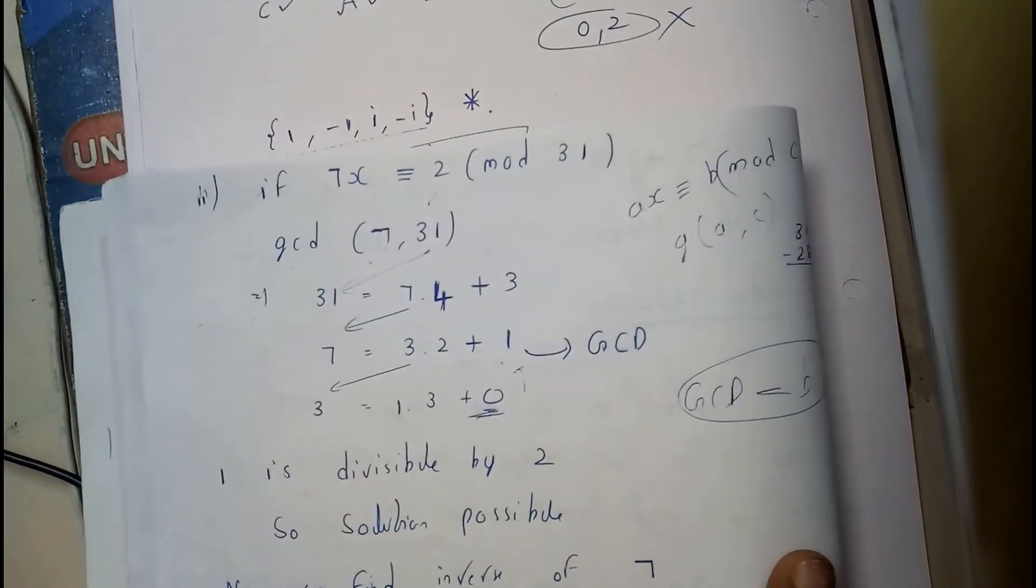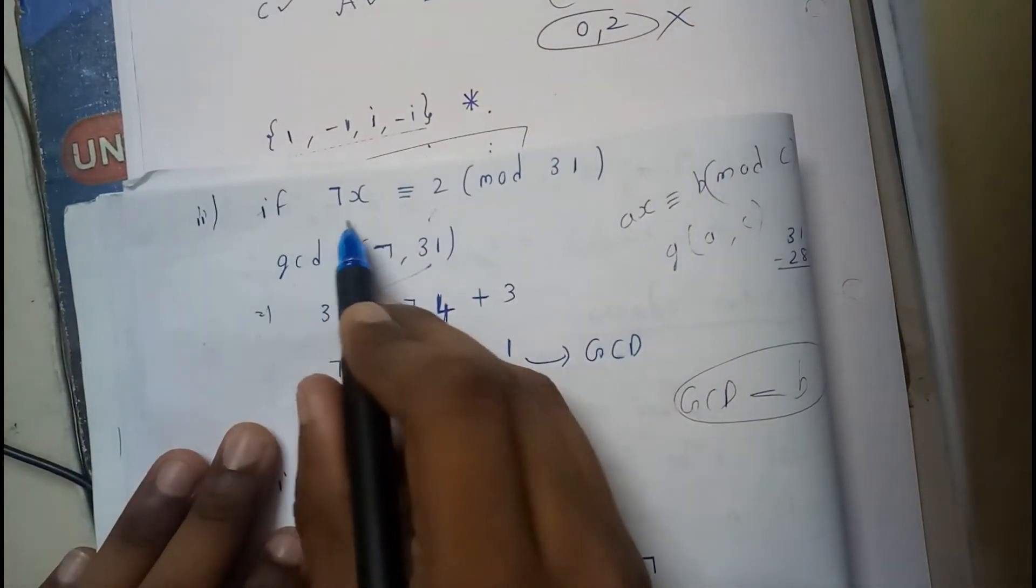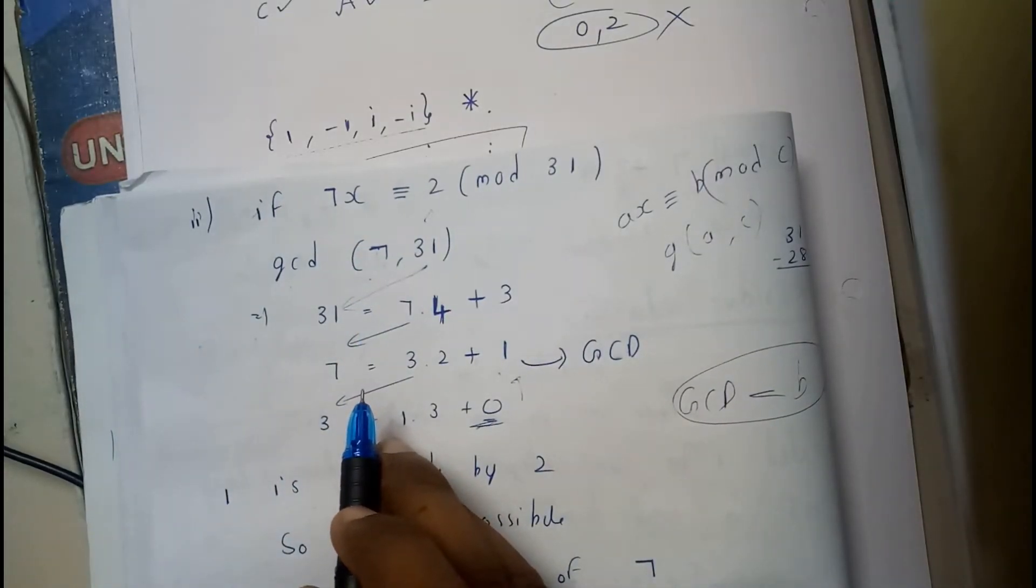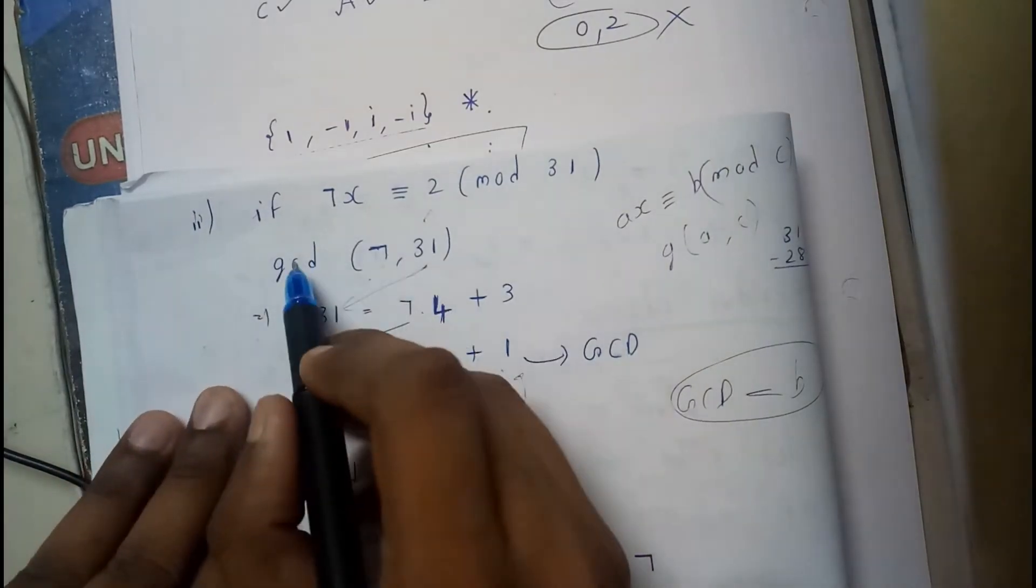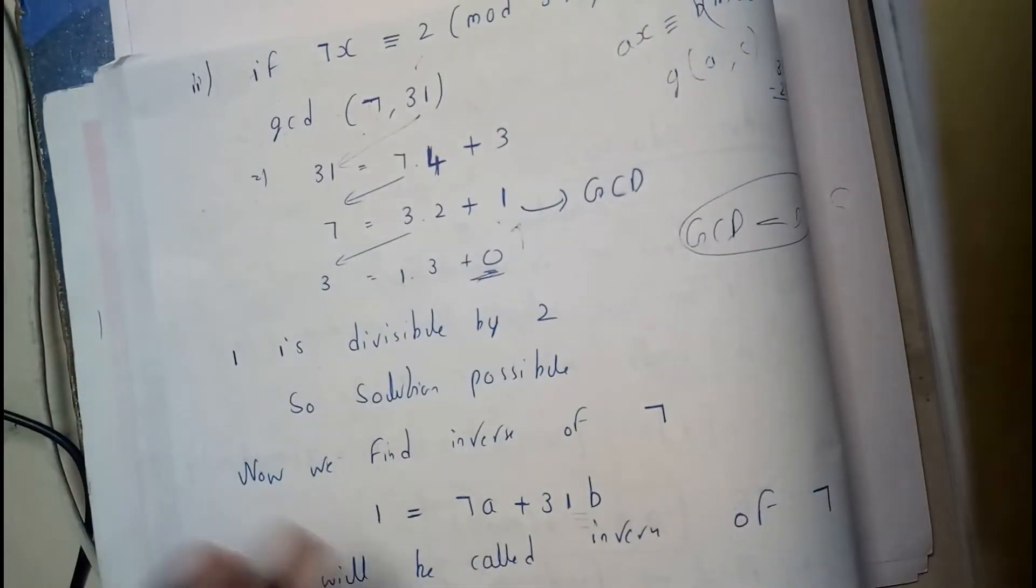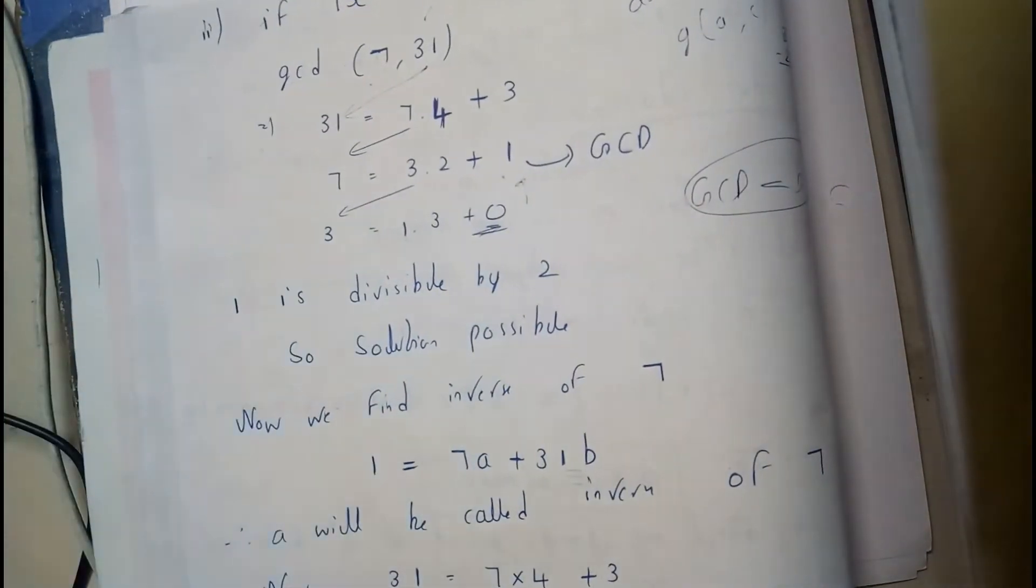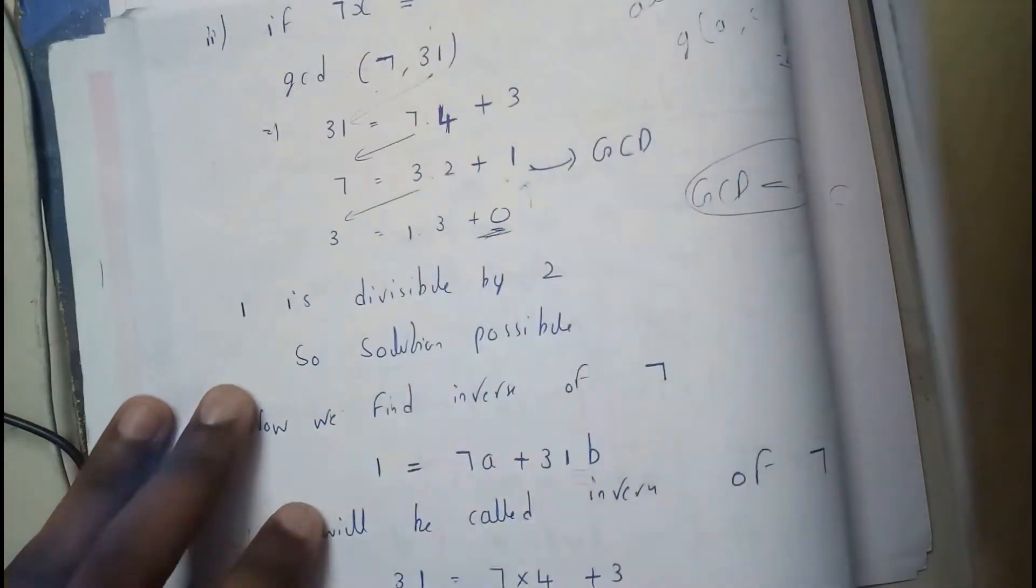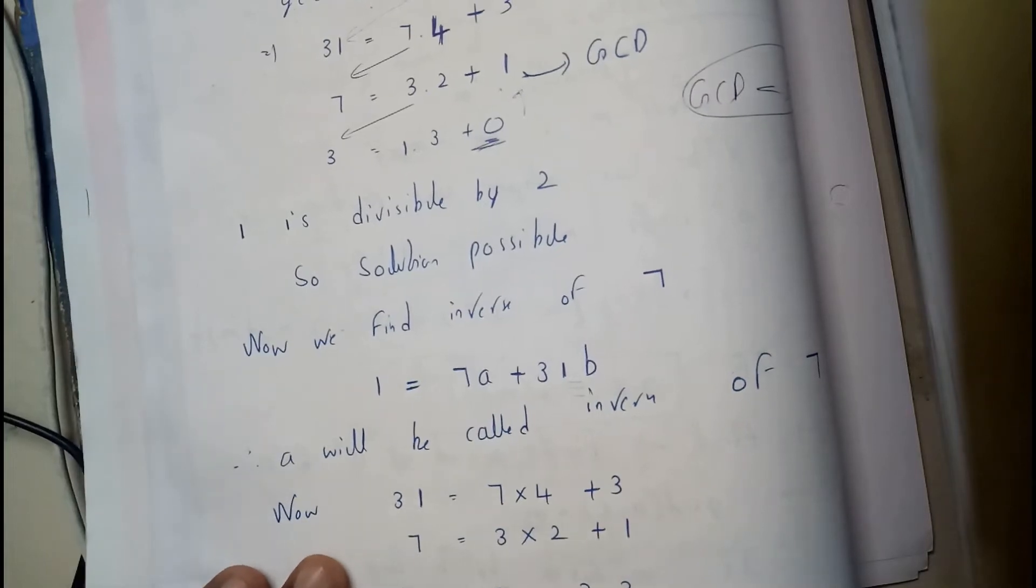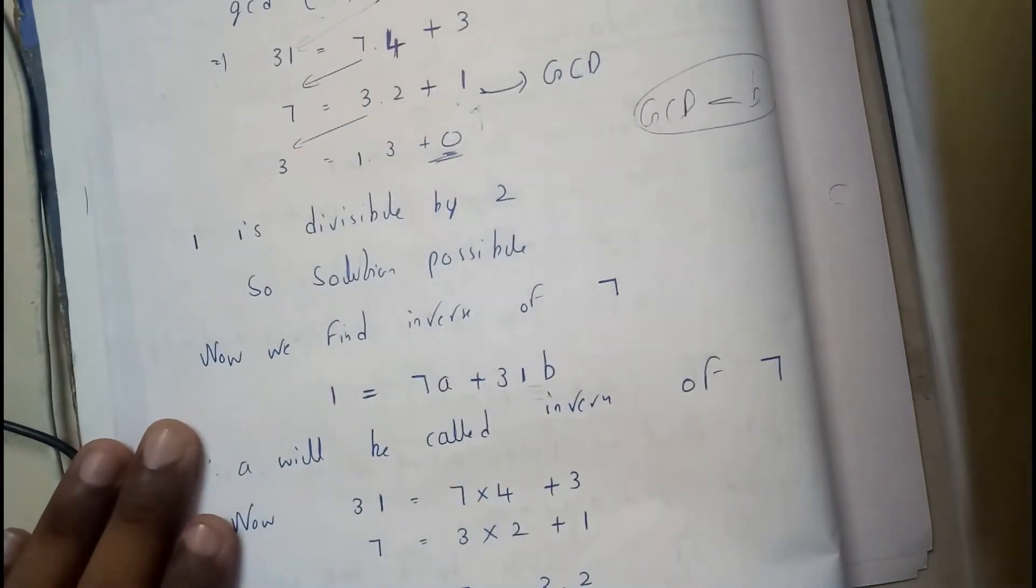Here is the next problem on the same topic. If 7x equality 2 mod 31, I have told you GCD of 7 comma 31. 31 equals 7 into 4 plus 3, 7 is equal to 3 into 2 plus 1, 3 is equal to 1 into 3 plus 0. So 1 is the GCD. 1 is divisible by 2, yes that's true, so there is a solution possibility.